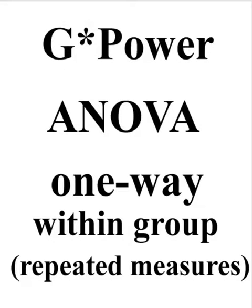We're going to use the G-Power software to determine the minimum sample size needed to run a one-way within-group ANOVA, also called repeated measures. There's just one group, but multiple repeated measures.